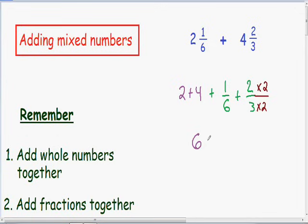So now I'm going to simplify my two fractions. Our first fraction of 1/6 stays the same. And our second fraction in our numerator, we have 2 times 2, which is equal to 4. And in our denominator, we have 3 times 2, which is equal to 6.